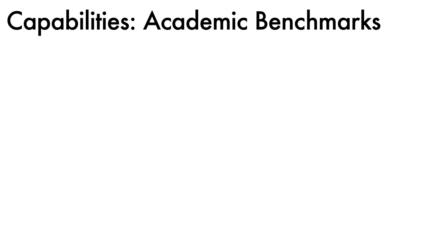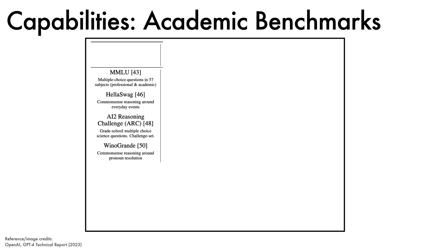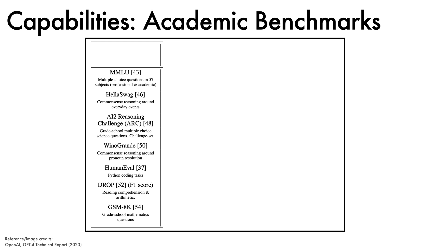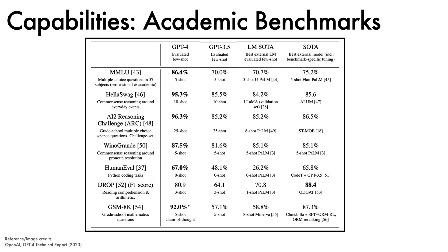The next experiments compare models on seven academic benchmarks: MMLU for multiple-choice questions spanning 57 subjects; HellaSwag for common-sense reasoning; AI2 Reasoning Challenge for grade-school multiple-choice science questions; Winogrande for common-sense reasoning relating to pronoun resolution; HumanEval for Python coding tasks; DROP for reading comprehension and arithmetic; and GSM-8K for grade-school mathematics. We can compare GPT-4 few-shot with GPT-3.5 few-shot, the best few-shot non-GPT language model, and the current state-of-the-art allowing for benchmark-specific fine-tuning. On all benchmarks, GPT-4 performs very strongly, outperforming GPT-3.5 and the prior few-shot state-of-the-art, in some cases by very large margins. GPT-4 also outperforms fine-tuned models in all cases except the DROP benchmark, where a fine-tuned method still performs best.